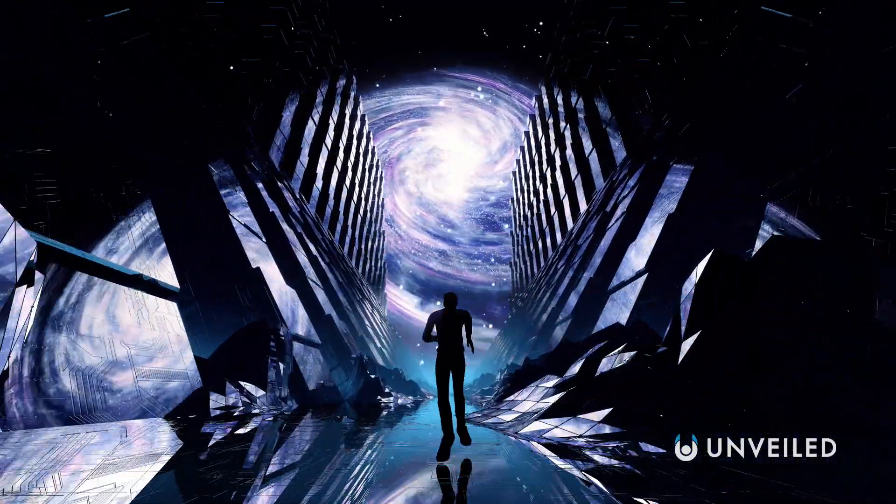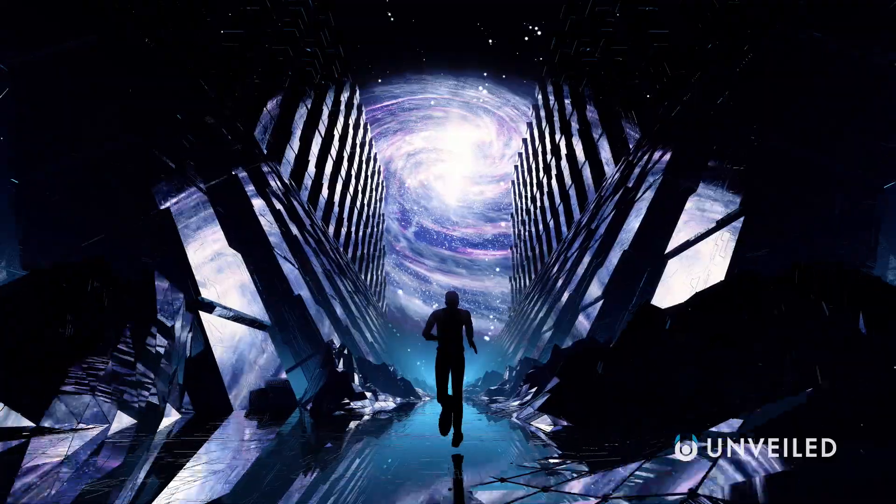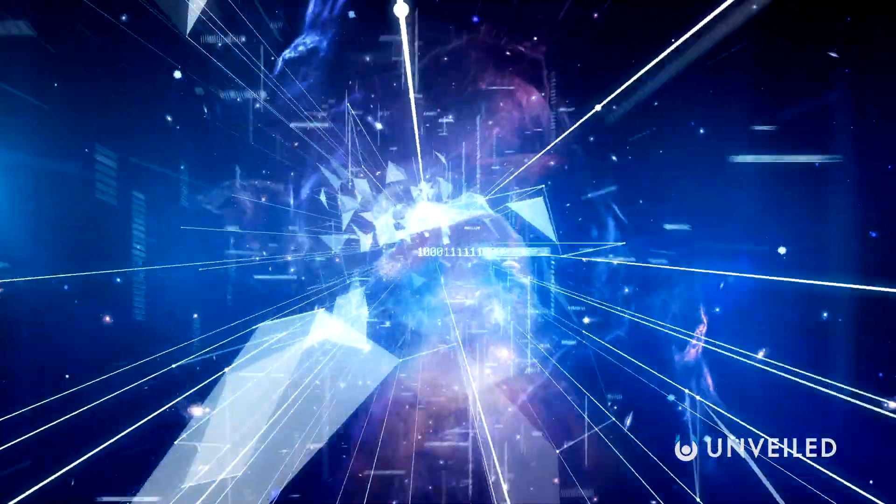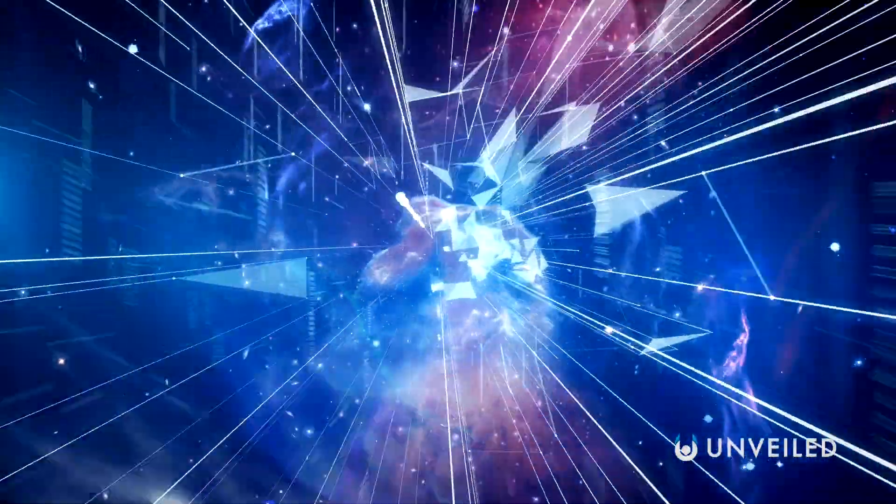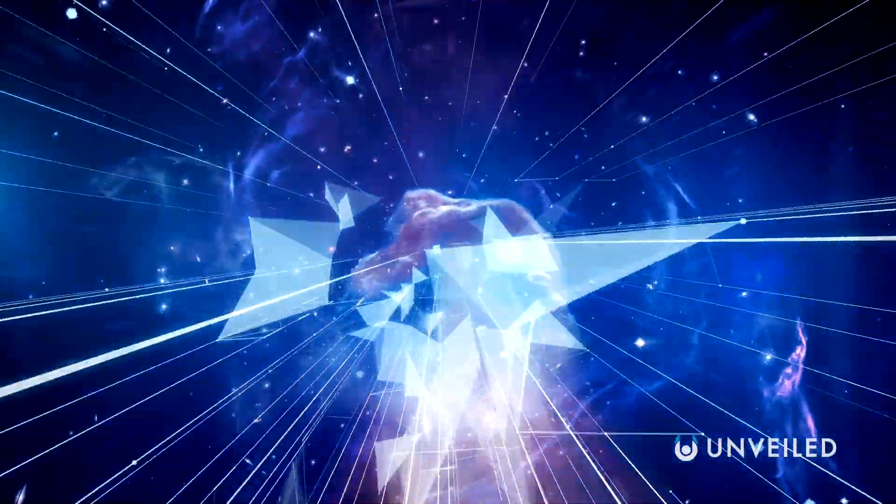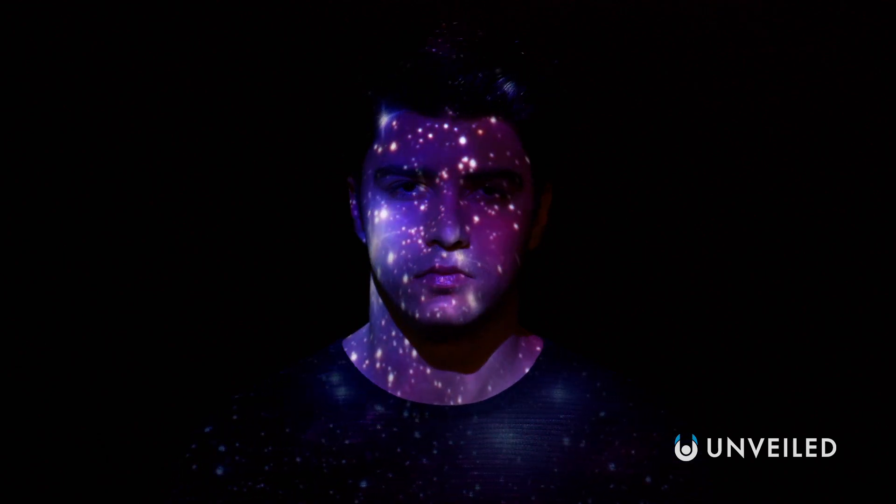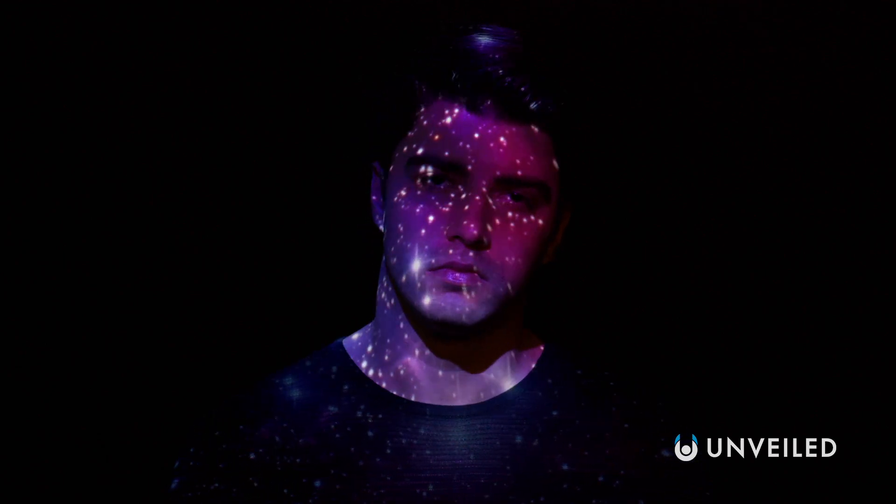Consider the enormous leap between mastering a star system and mastering an entire galaxy. In the Milky Way alone, there are anywhere from one hundred billion to four hundred billion stars. Kardashev's Type 2 controls just one of them. Type 3 controls all four hundred billion of them. Could it ever really be possible to make such an incredible upgrade?